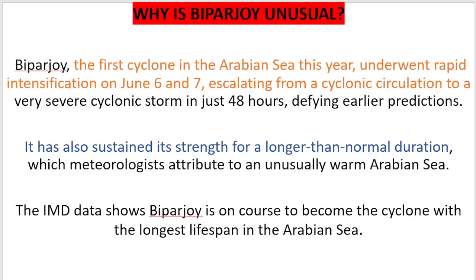There was rapid intensification on June 6th and 7th — within 48 hours, what was just a normal cyclone circulation became much stronger. As you know, a cyclone forms gradually: the longer it stays over the ocean and the warmer the ocean, the more evaporation occurs, converting the storm circulation into a cyclone. Due to this rapid intensification, its speed increased and it converted into a very severe cyclonic storm within 48 hours.